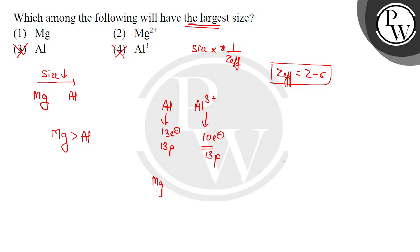Similarly, Mg and Mg 2 plus. The cation size is less than the parent atom. Mg has 12 electrons and 12 protons. Mg²⁺ has 10 electrons and 12 protons. Again, Mg size will be more.